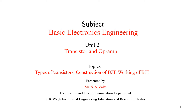Hello friends, from this lecture we will start with unit number 2, that is transistor and op-amp. The syllabus of unit number 2 mainly includes three electronic components: first is your bipolar junction transistor, then second is your MOSFET, and third is your op-amp, that is operational amplifier. In this lecture we will cover the basics of transistors — the different types, the construction of bipolar junction transistor, and its working.